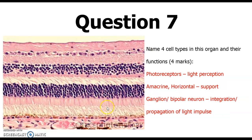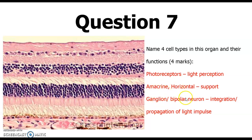This is a slide of the retina, so you can see all 10 layers and appreciate the various cell types. Remember these cell types support the photoreceptors, support the ganglion cells, and the amacrine cells are for the bipolar neurons. The photoreceptor cells include the rods and the cones.